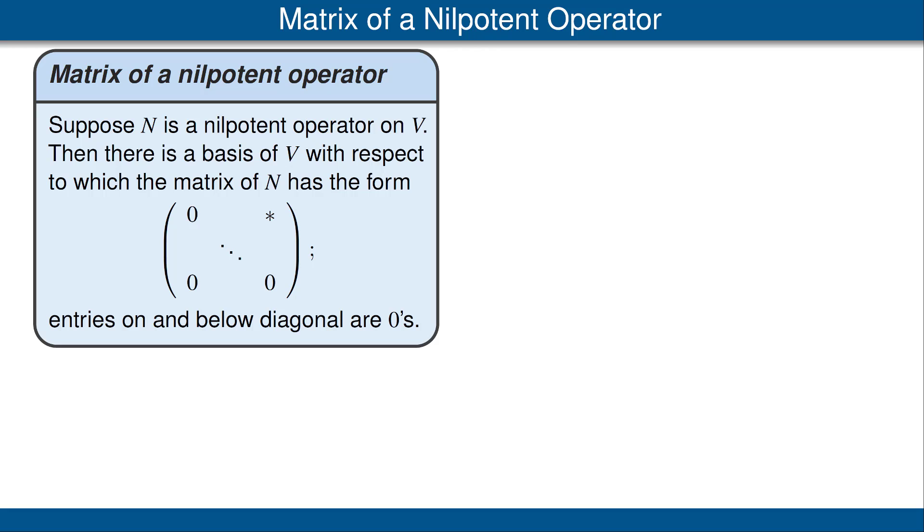Because the only eigenvalue of a nilpotent matrix is zero, the result shown here follows immediately from our result earlier that if we have a complex vector space, there's some matrix with respect to which the operator has an upper triangular matrix.